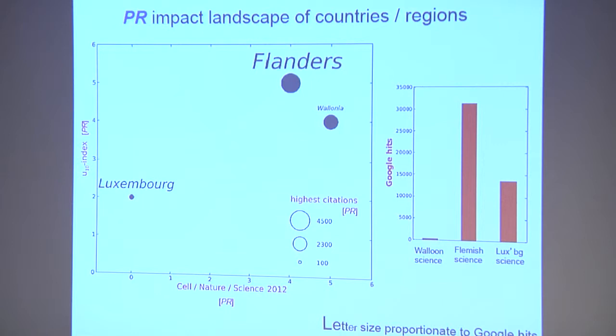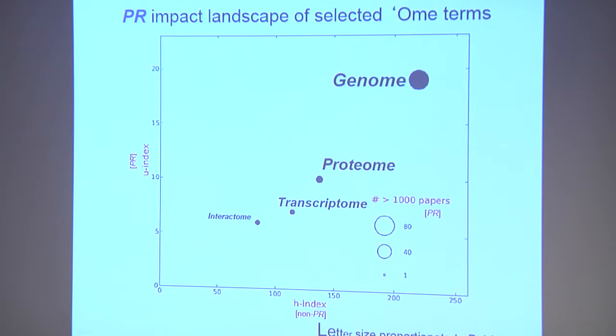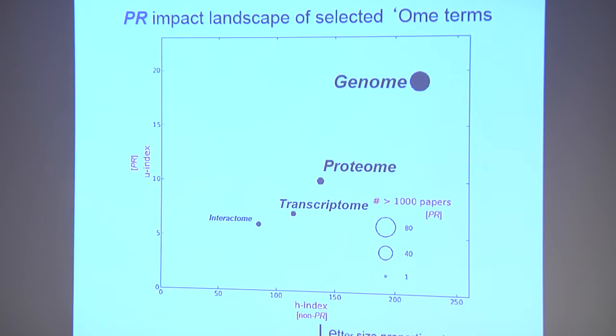You can do scientific fields — like anything that ends with the word '-ome.' Genome, of course, everybody's heard of, so it gets the highest number of PubMed hits. Then proteome, transcriptome, and interactome. Interactome — nobody really says the word, so it doesn't score many hits. But when you look at the personalized and refined landscape, you find genome is way off by itself, but interactome and transcriptome are comparable to each other, despite the tenfold difference in PubMed hits they're getting.